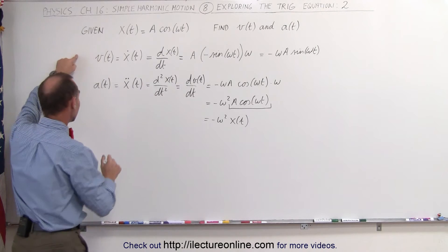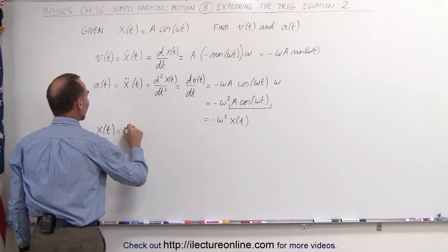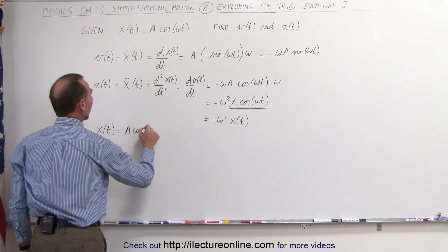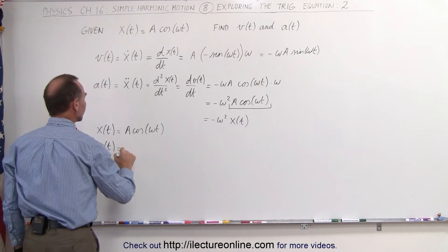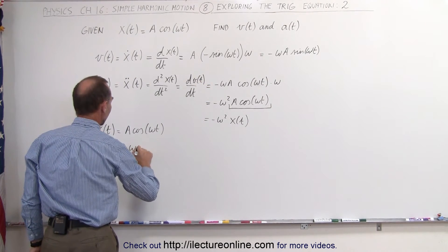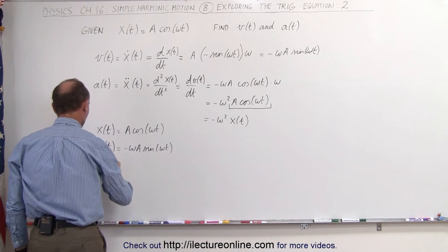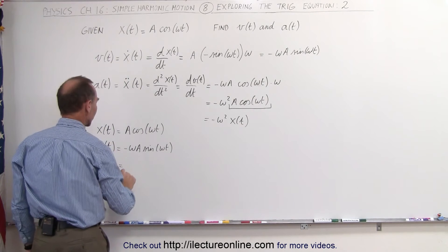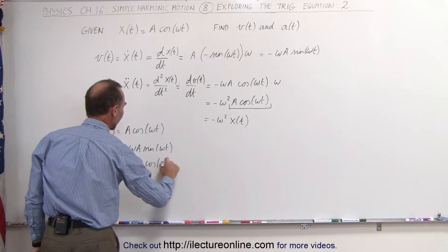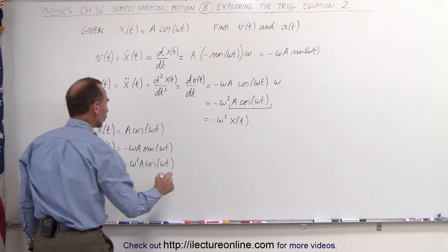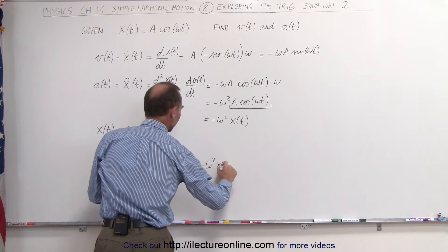Summarizing those three equations: position as a function of time, using trigonometric functions, is a times the cosine of omega t. Velocity as a function of time is equal to minus omega times a times the sine of omega t. And acceleration as a function of time is minus omega squared a times the cosine of omega t, which can also be written as minus omega squared times x as a function of time.